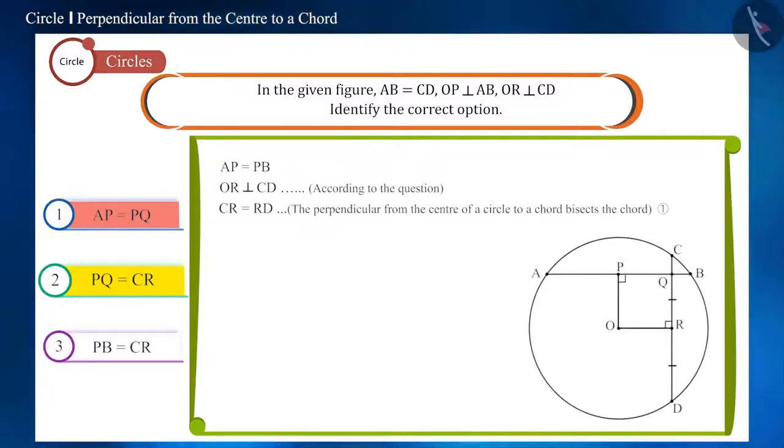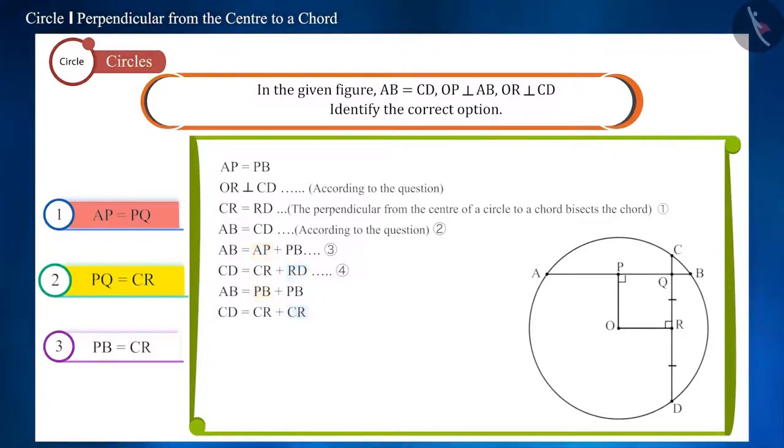And we are also given that these two chords AB and CD are equal. According to the figure, we can write AB equals CD. And we know that AP is equal to PB and CR is equal to RD. So, if we put PB in place of AP and CR in place of RD, then we will get AB equal to 2PB and CD equal to 2CR. And we are given that AB and CD are equal. So, we can say that PB is equal to CR.